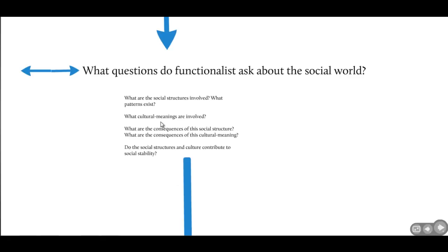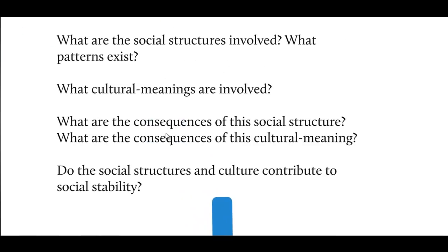I'm trying to teach you to think of these perspectives as literary genres — just as comedy or romance has assumptions, so does structural functionalism. Those assumptions lead them to ask certain types of questions. First, what are the social structures and patterns involved? Then, what are the cultural meanings involved? Next, what are the consequences of these social structures and cultural meanings? And finally, do the social structures and cultures contribute to social stability and harmony?